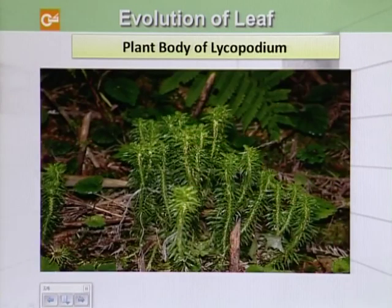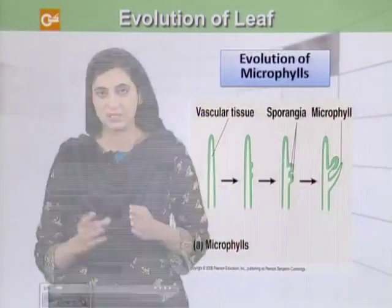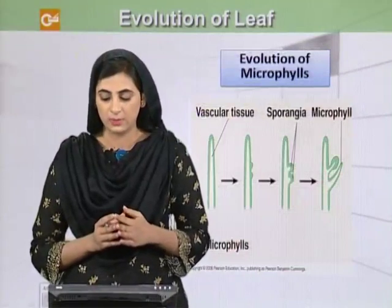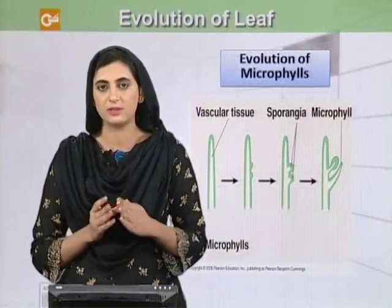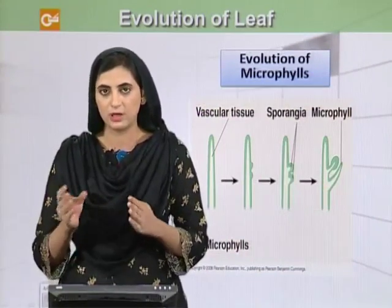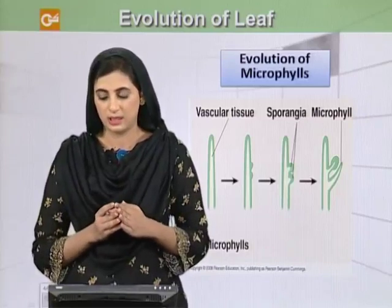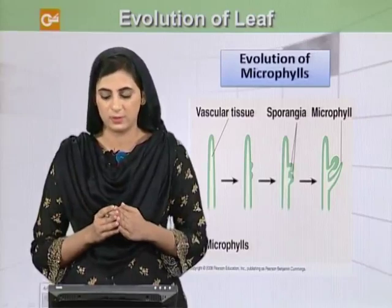With due course, Lycopodium or Lycopods developed leaves for the first time. These were small in size and they were called microphylls, because they have a single vein in them. It is thought that these microphylls, or small leaves with a single vein, were evolved from sporangia — a modification of sporangia led to the development of microphylls.